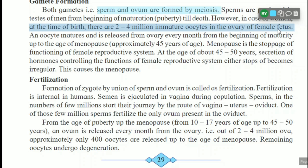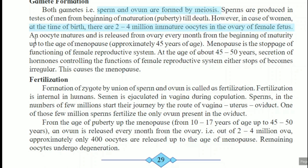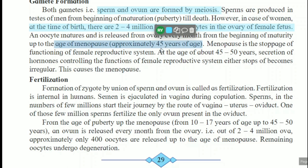At that time, already inside her body 2 to 4 million immature oocytes are present. But the maturation and release of these oocytes starts from the beginning of maturity up to the age of menopause — approximately 45 years of age. Up to this age, every month there is a release of ovum. Menopause is the stoppage of functioning of the female reproductive system.